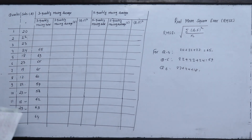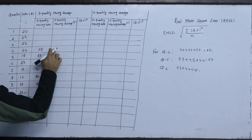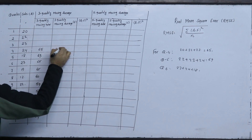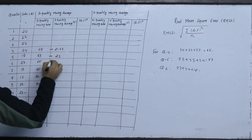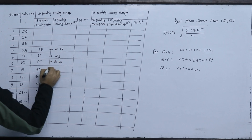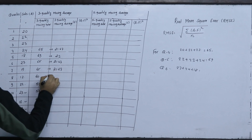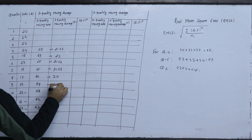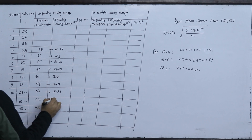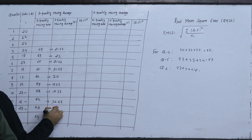The 3-quarterly moving averages: 65 divided by 3 is 21.67, 69 divided by 3 is 23, 65 divided by 3 is 21.67, 65 divided by 3 is 21.67, 60 divided by 3 is 20, 59 divided by 3 is 19.67, 58 divided by 3 is 19.33, 62 divided by 3 is 20.67, 63 divided by 3 is 21, 64 divided by 3 is 21.33.